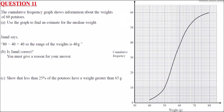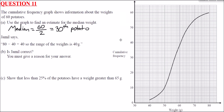Question 11 — a cumulative frequency graph shows information about the weights of 60 potatoes. To estimate the median weight: the median is the 60 ÷ 2 = 30th potato. Reading across at 30 on the cumulative frequency axis, then down to the weight axis, the median weight is 57 grams. Show the lines on the diagram as evidence of working.